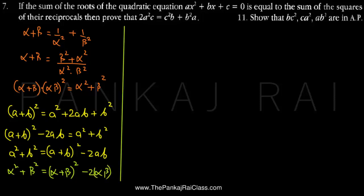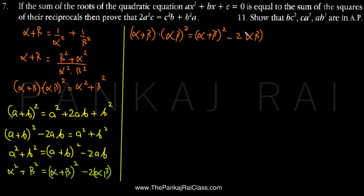We can continue with what we have. We have alpha plus beta multiplied by alpha beta whole square is equal to alpha plus beta whole square minus 2 times alpha beta. Now alpha plus beta is minus b by a, and alpha beta which is the product of roots is given by the constant term c upon the coefficient of x square which is a. So alpha beta is c by a. Let us now substitute these values in this equation.